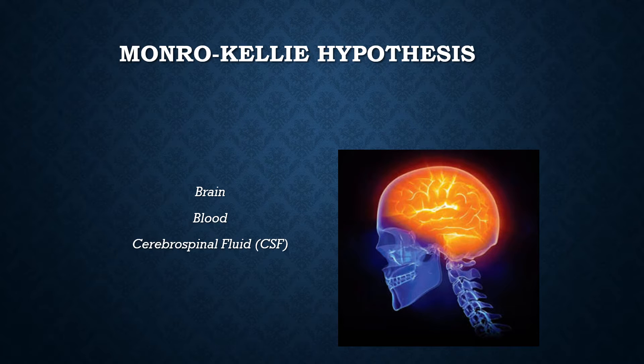So this can be a delicate balancing act. We need blood in the brain — we need to perfuse the brain. We need CSF in the brain, and we need our brain to stay in our skulls. But we can't have too much pressure in the brain. So while the body can accommodate for changes in pressure, we need to think about what risks might come with these changes in blood, brain, and CSF.